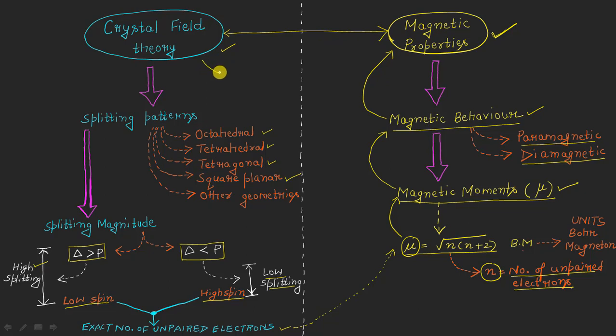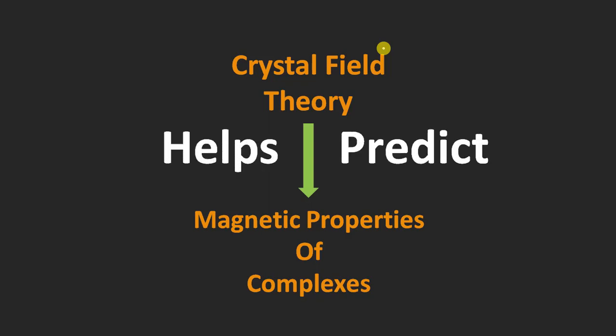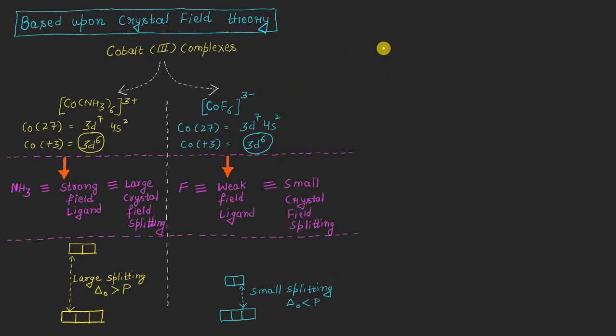Crystal field theory tells us the value of n, the number of unpaired electrons, with the help of which we can always calculate the values of mu, which represent the magnetic properties. So the crystal field theory helps predict the magnetic properties of the transition metal complexes. Here is an example based upon the crystal field theory showing how it will help us in the prediction of the magnetic properties of cobalt(III) complexes.